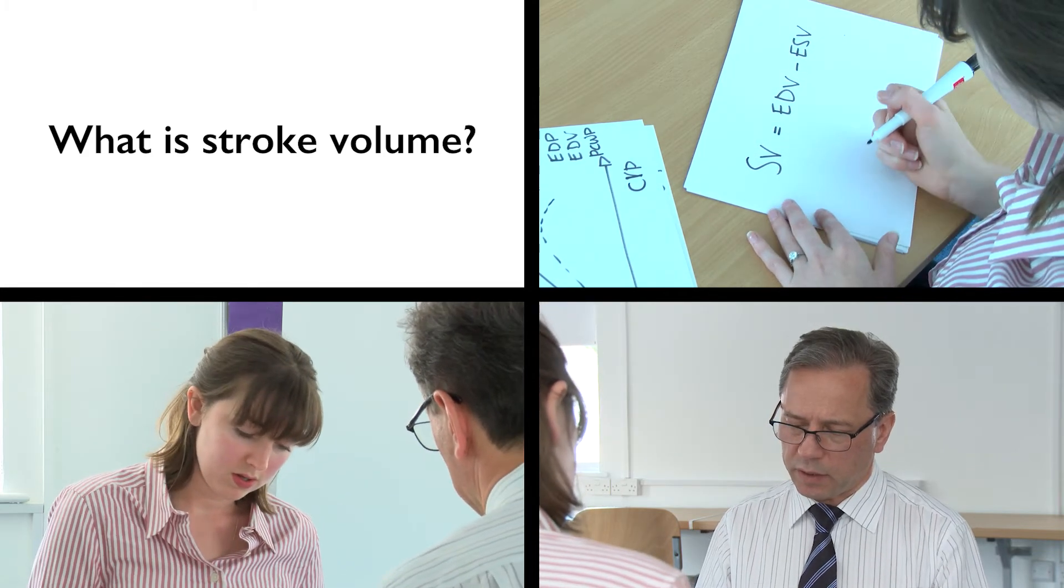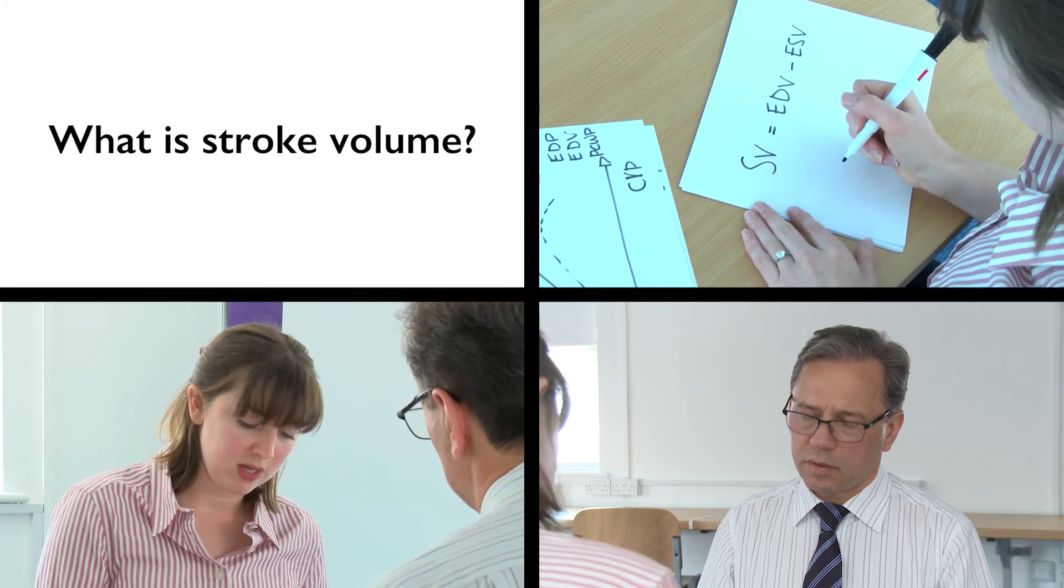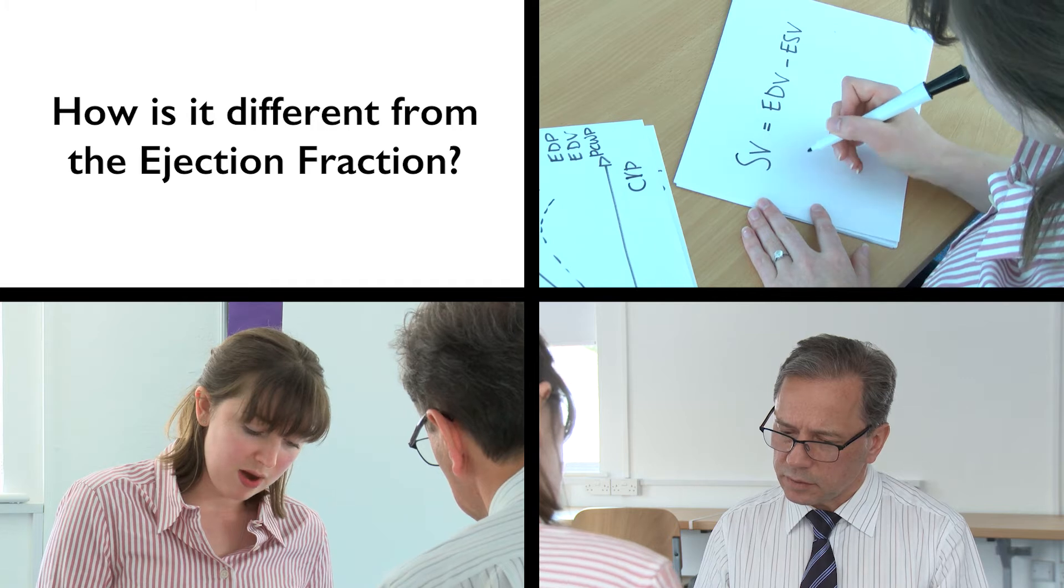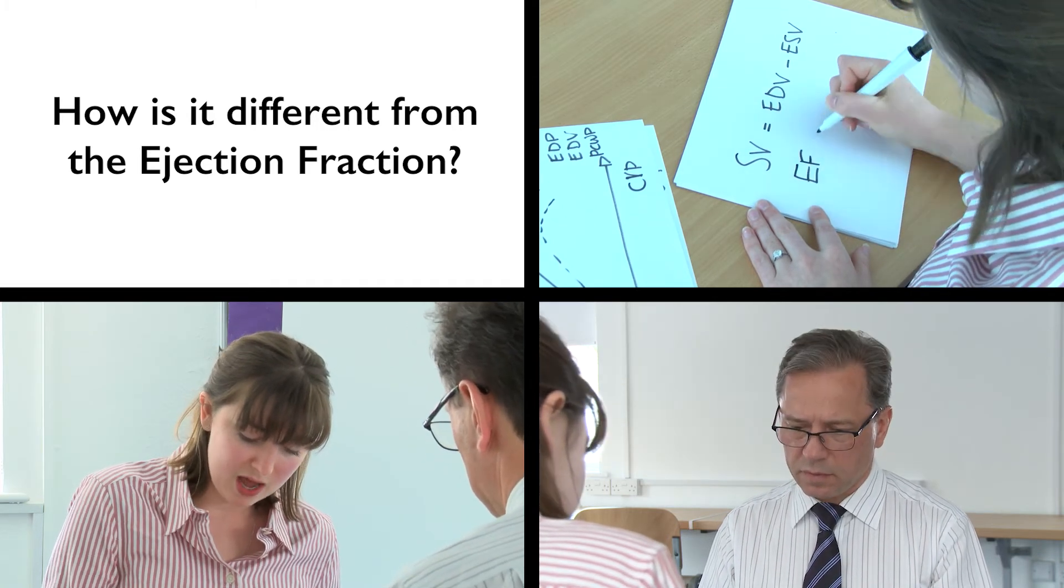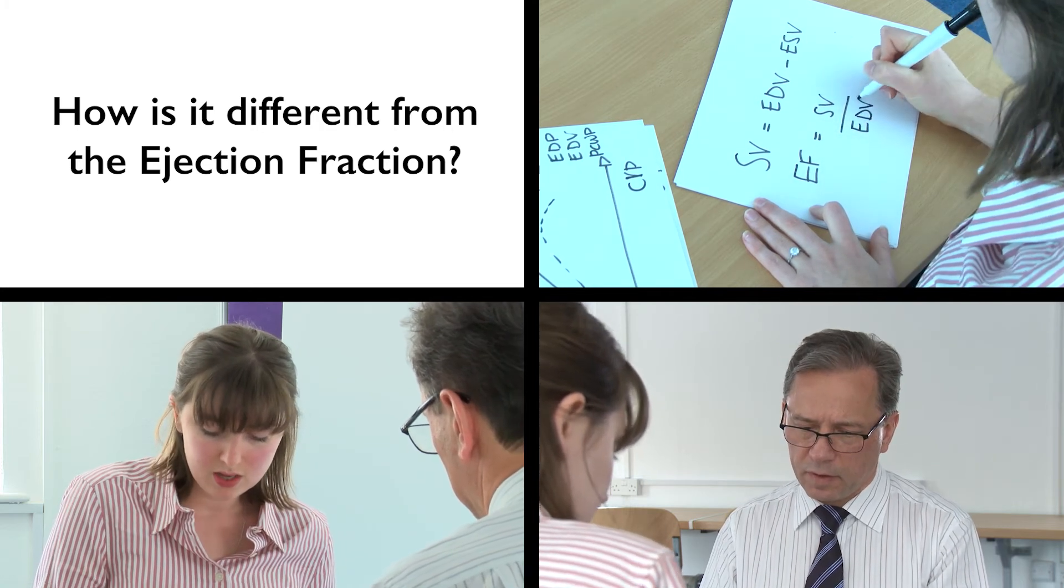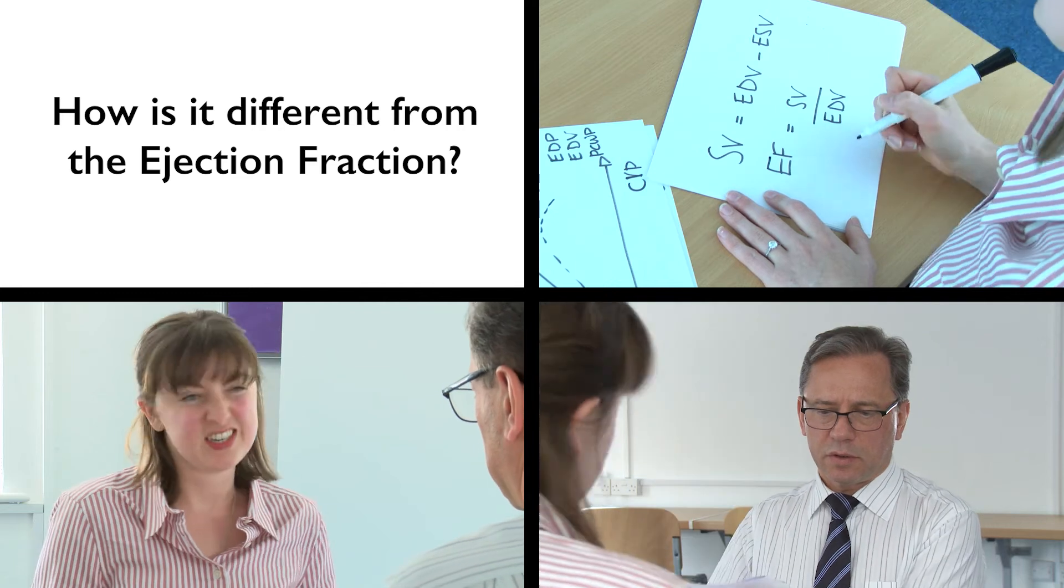And what do we measure clinically normally? We measure stroke volume and also the ejection fraction. How are they different? They represent a similar thing, but the ejection fraction is calculated by dividing the stroke volume by the end diastolic volume, and so you get a percentage. And what's the normal percentage? 60 to 65.